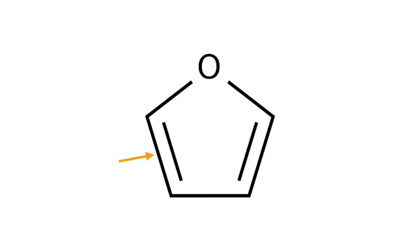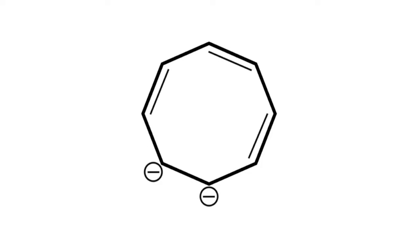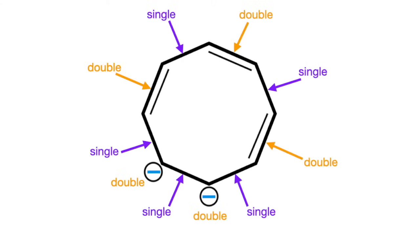So we have alternating double and single bonds with the lone pair on the oxygen. To make it easy, just call the lone pair double and go around the ring to check for double-single alternation. Here's an example of a planar cyclic with negative charges. A negative charge indicates an extra pair of electrons, which means negative charges are pi electrons. So we do have alternating double and single bonds with negative charges — just call the negative charges double and verify the double-single pattern around the ring.